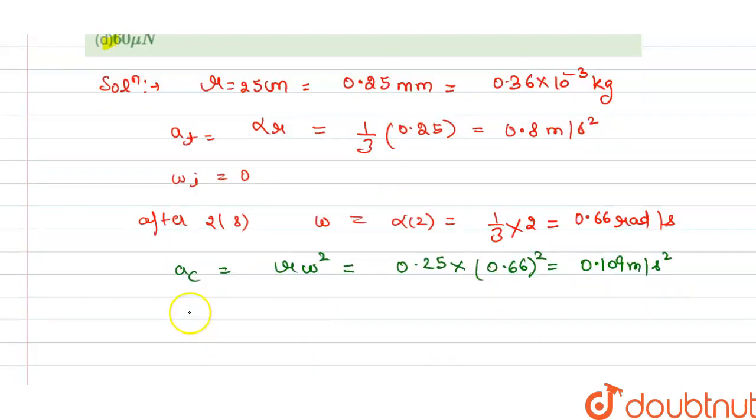So net acceleration will be the magnitude of tangential acceleration and centripetal acceleration. This is at square plus ac square. From this we get 0.8 square and 0.109 square, so net acceleration is 0.137 meter per second square.